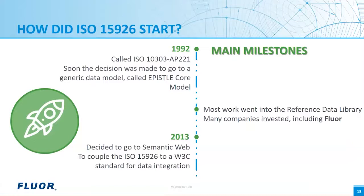This data model was created, and until today there was no need to change it. The project also started to make the reference data library — this is a database of terms. A couple of dozen companies worked on that; Fluor also invested in that. The semantic web standards were released in 2004, but it was around 2013 before the ISO 15926 team decided to adopt those W3C standards.